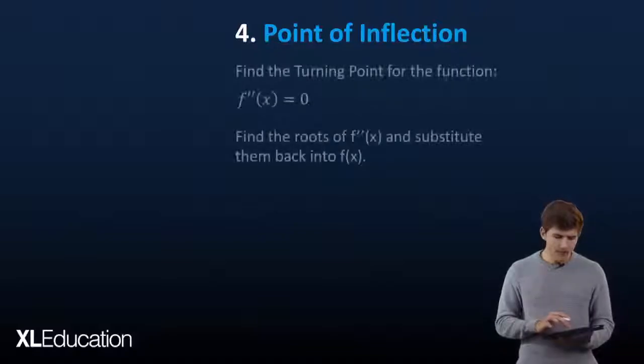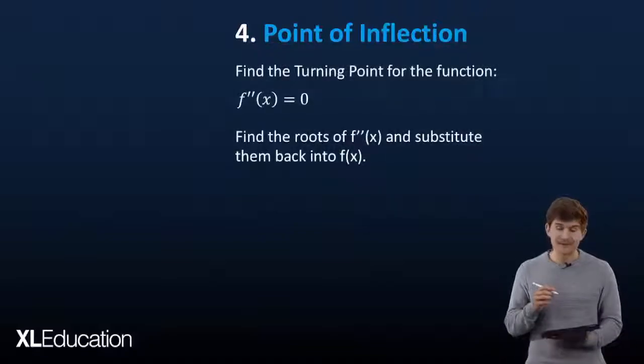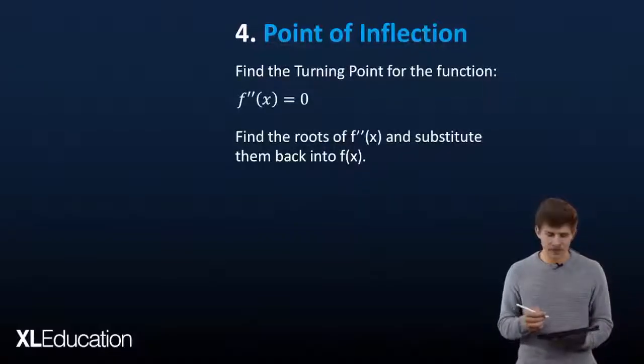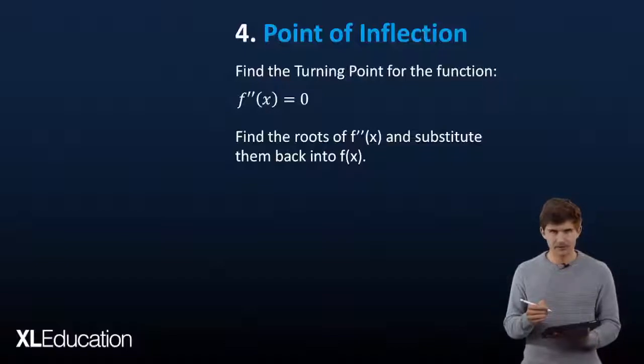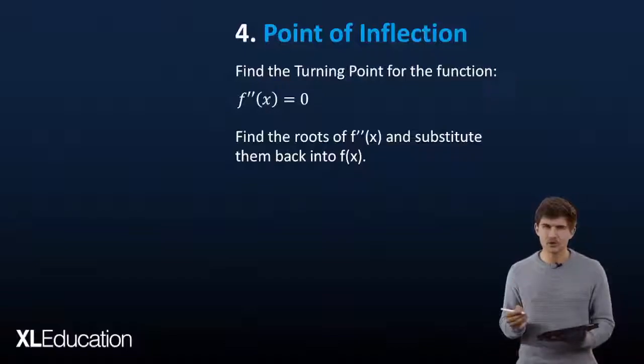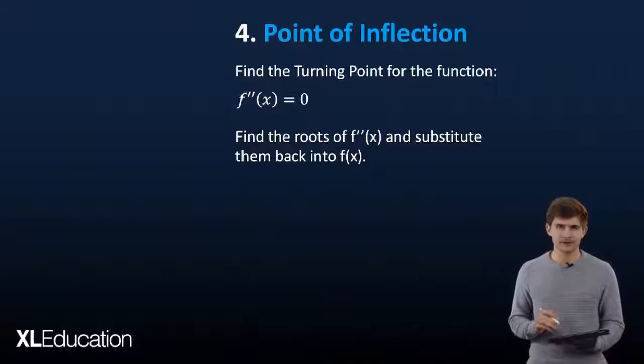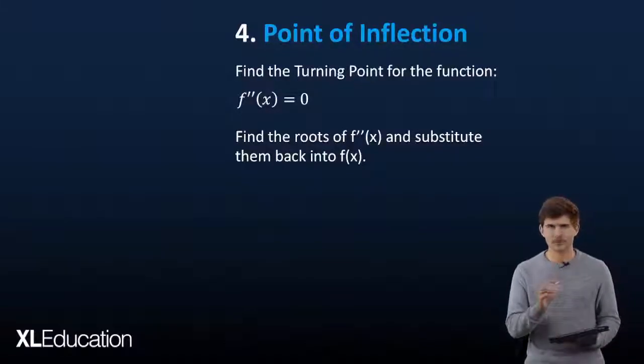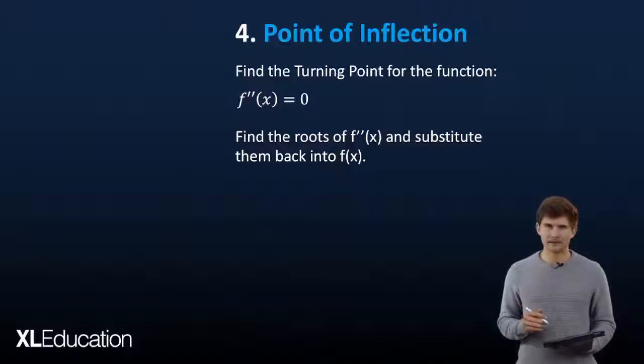The point of inflection is the point along our curve where our gradient starts shifting from negative to positive. For our purposes, all we need to know is: take the second derivative, set it equal to zero, find its roots, then substitute those roots back into your original function. Let's see how the example works out.